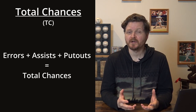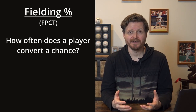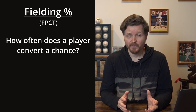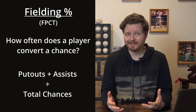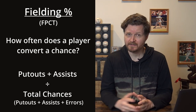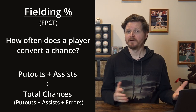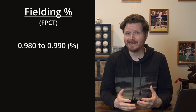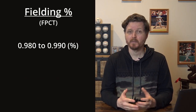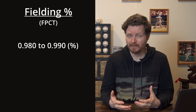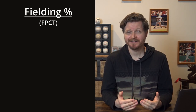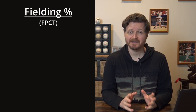So we have the formula: errors plus assists plus put outs equals chances. From these we calculate fielding percentage, which answers the question: out of how many chances, how often does a player convert that into a put out or an assist? The formula is put outs plus assists divided by chances. Historically, fielding percentages have been well above .900, with the best in history ranging from .980 to .990.